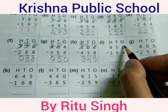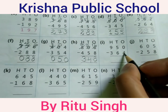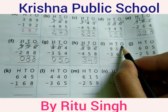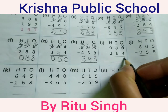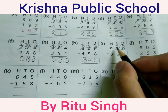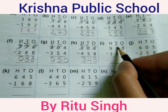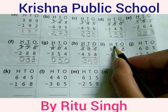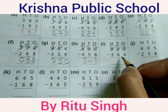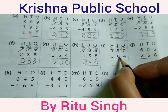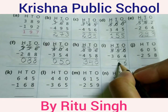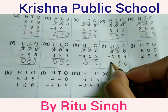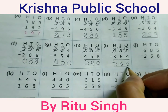0 minus 4 — 0 is a smaller digit compared to 4. Borrow from 5, making it 10. 10 minus 4 equals 6. 4 minus 6 — 4 is a smaller digit compared to 6. Borrow from 9, making it 14. 14 minus 6 equals 8. 8 minus 3 equals 5. Your answer is 586.